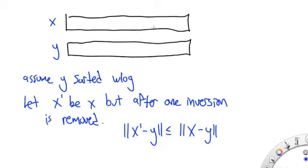So to do this proof, it's going to be helpful to think about two vectors, x and y. We're going to assume that y is sorted without loss of generality. What I mean by that is, the components of y have some ordering to them, but the ordering itself doesn't really matter. So let's just define the ordering so that y comes out sorted. But x isn't necessarily sorted. And if it's not sorted, that means it has some number of inversions in it.